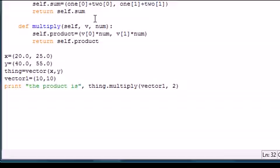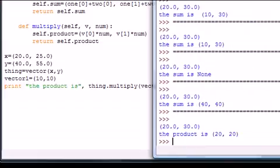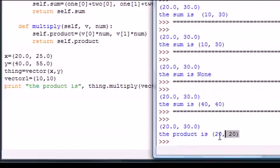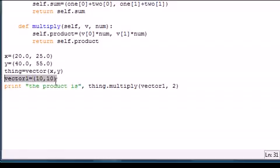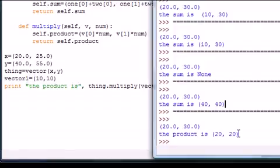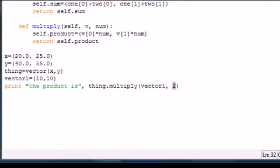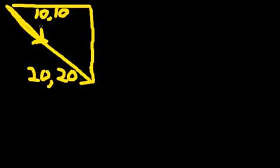And it says the product is 20,20. So this is the original vector, vector1, and when we multiply it by two we get an extended vector that has the product or a vector of 20,20. So that's your quick tutorial on what multiplying a vector actually means - again it means just multiplying both of the coordinates which gives you an extended vector of a different length.